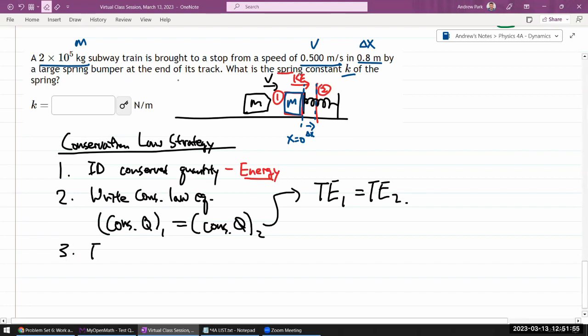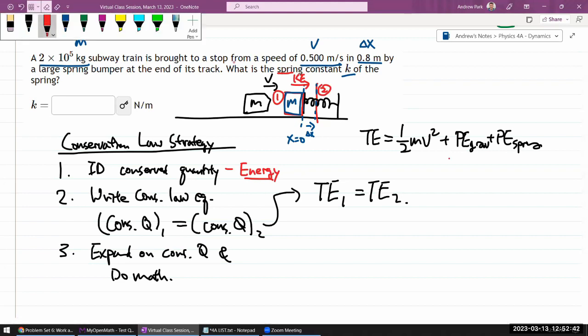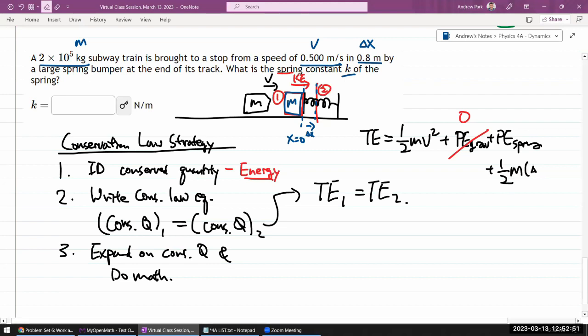So I need to decide on the snapshots to use. Snapshot one is this position here where it has all the kinetic energy and none of the potential energy. Snapshot two is here where the train has been brought to a stop and there's a maximum amount of spring potential energy. I'm saying total energy at one is equal to total energy at two. The next step is to expand on the conserved quantities and do math, solve for the quantities you are being asked for. So whenever we are talking about total energy, at this point in the semester, we are really speaking of the three forms of energy. There's kinetic energy. There's going to be one more form of kinetic energy we'll introduce later, but so far we have one. Two and three, we have two forms of potential energy.